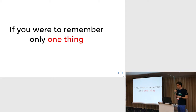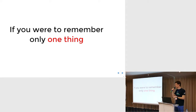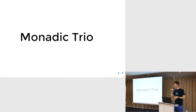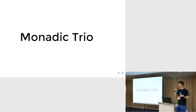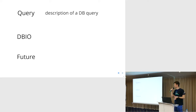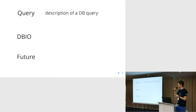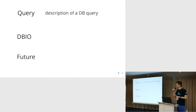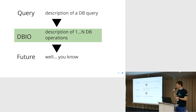So what about Slick? If you want to remember only one thing from this presentation: the monadic trio. It's basically what we deal with when operating with the Slick library. We have the Query — which is our description of database SQL operations. We have the DBIO — which is the actual action that will be fired. And we have the Future — which is the result of our operations.